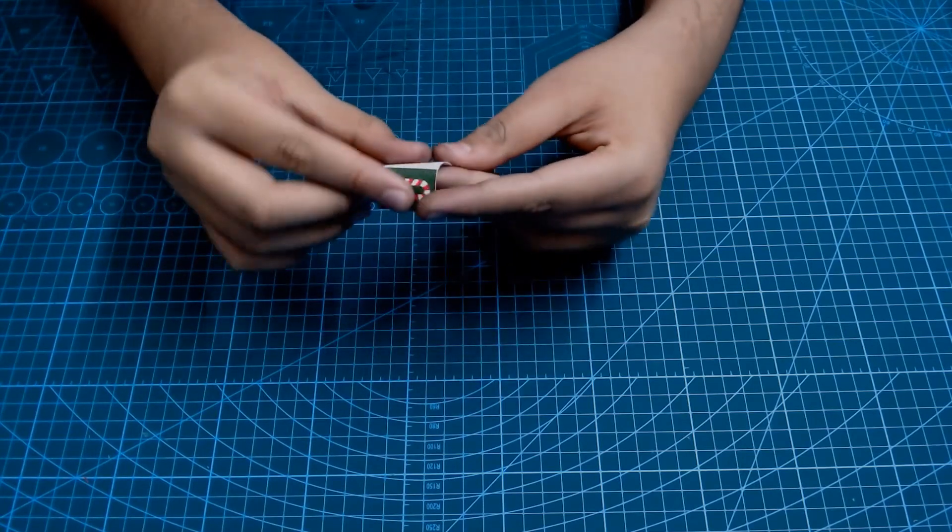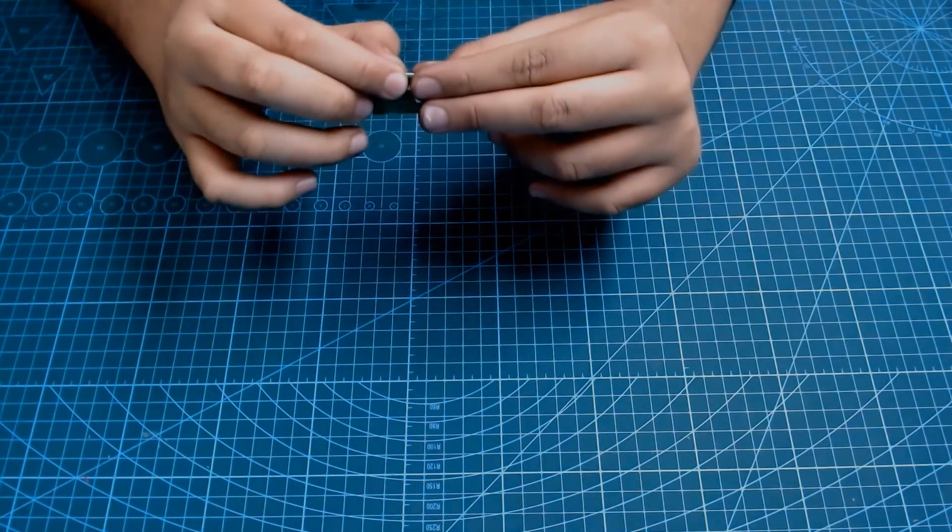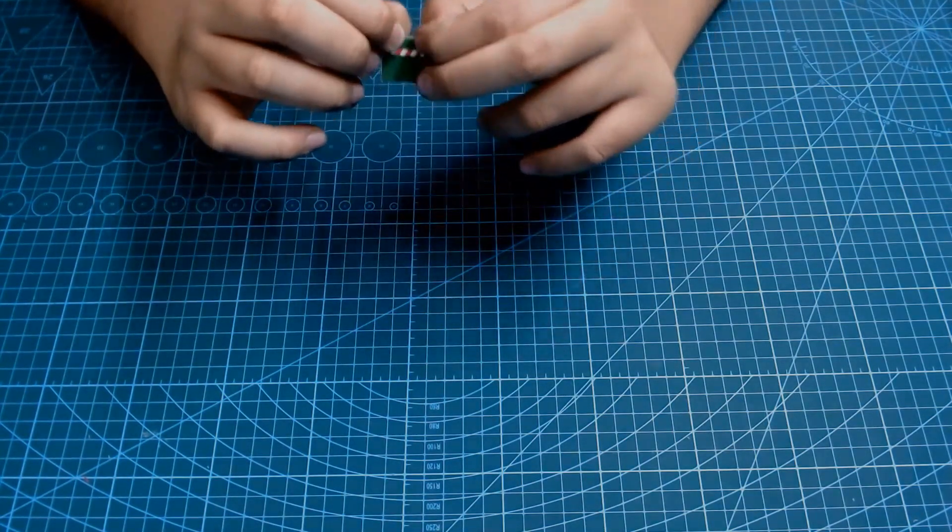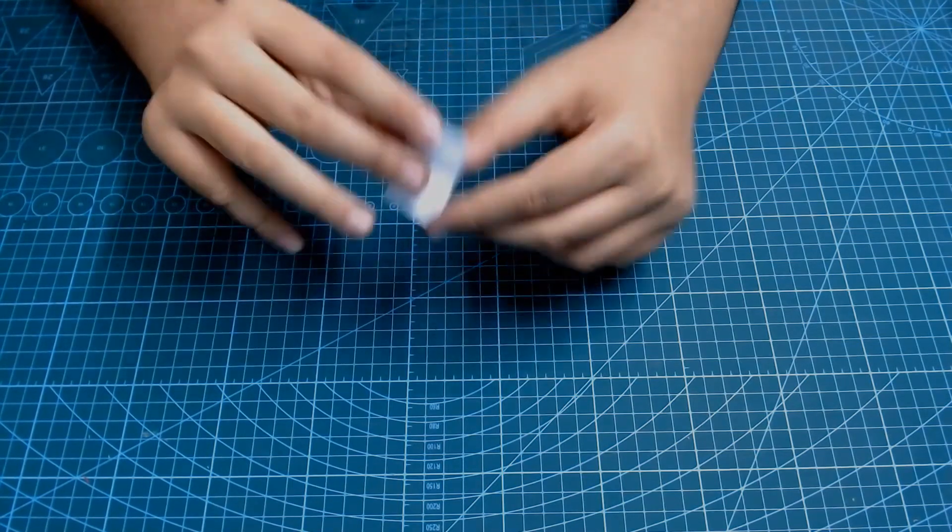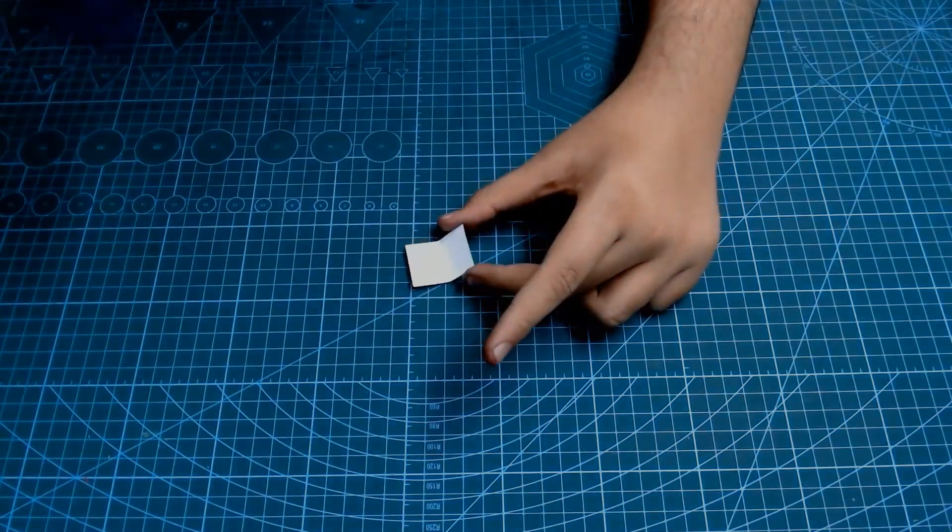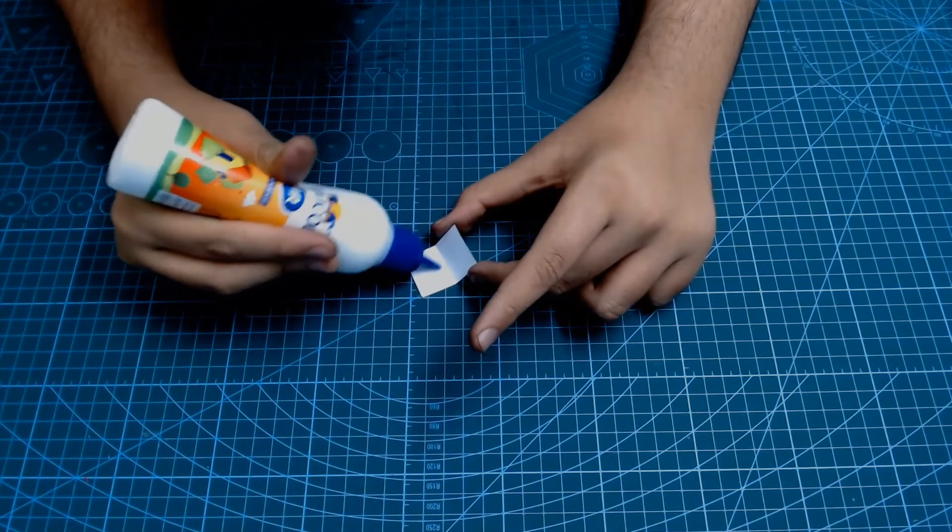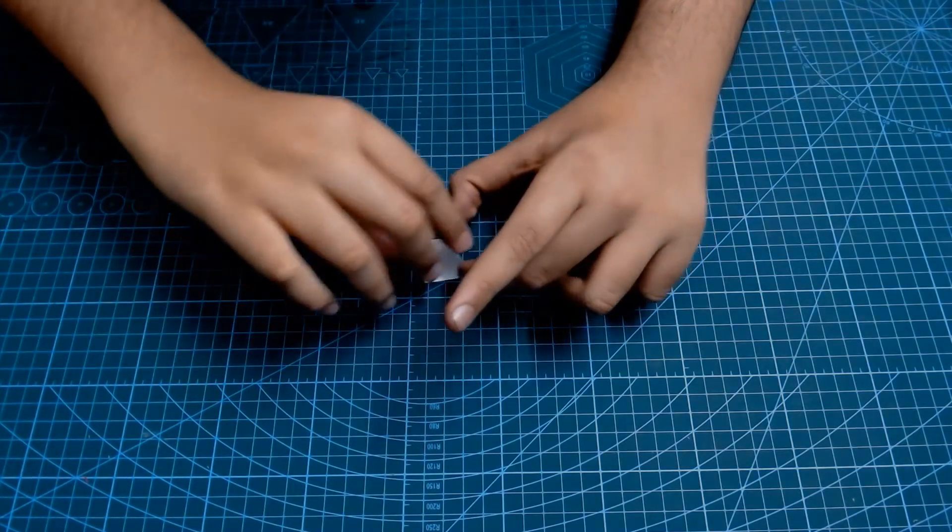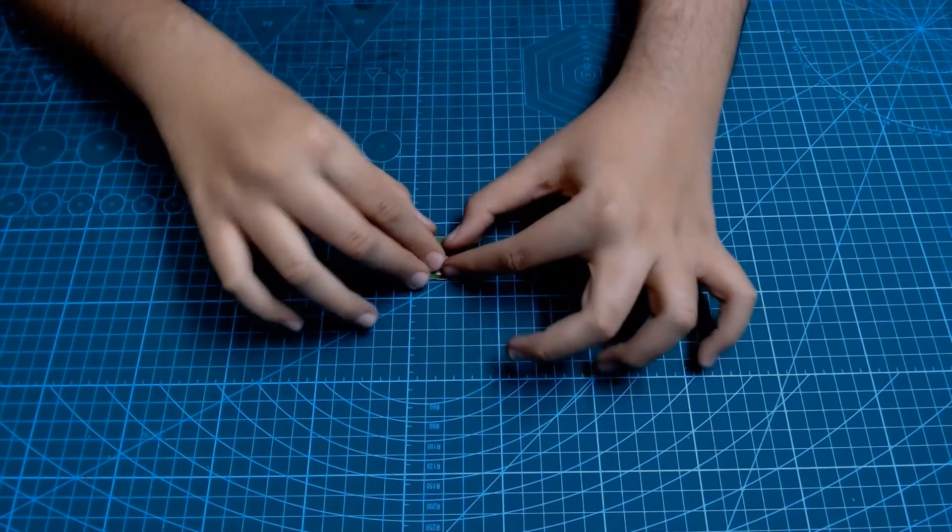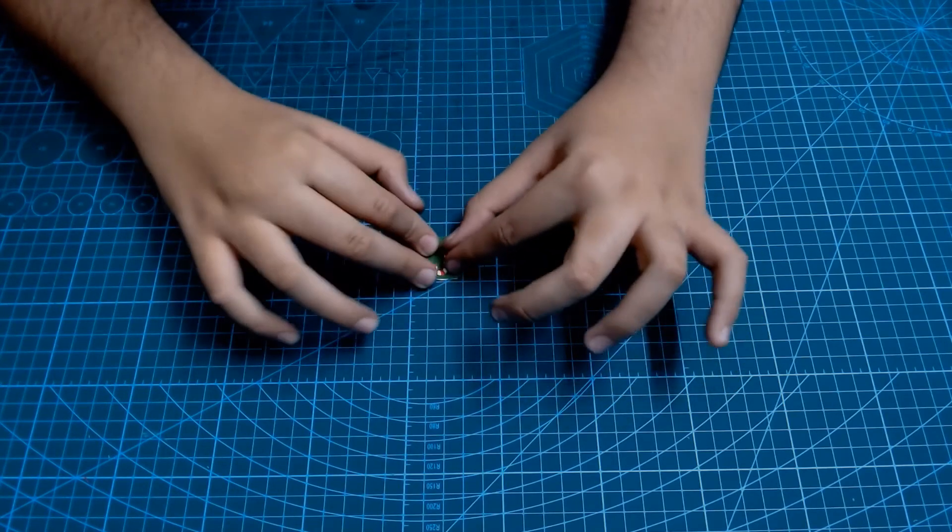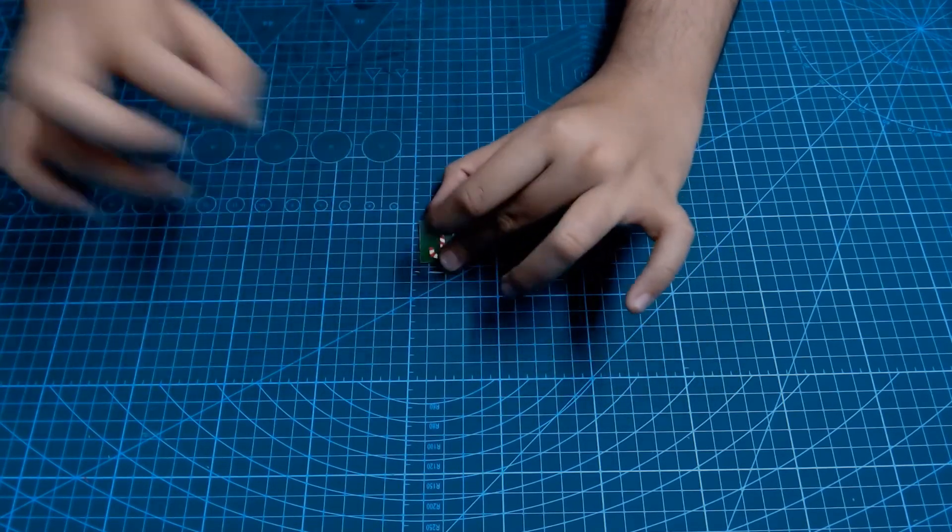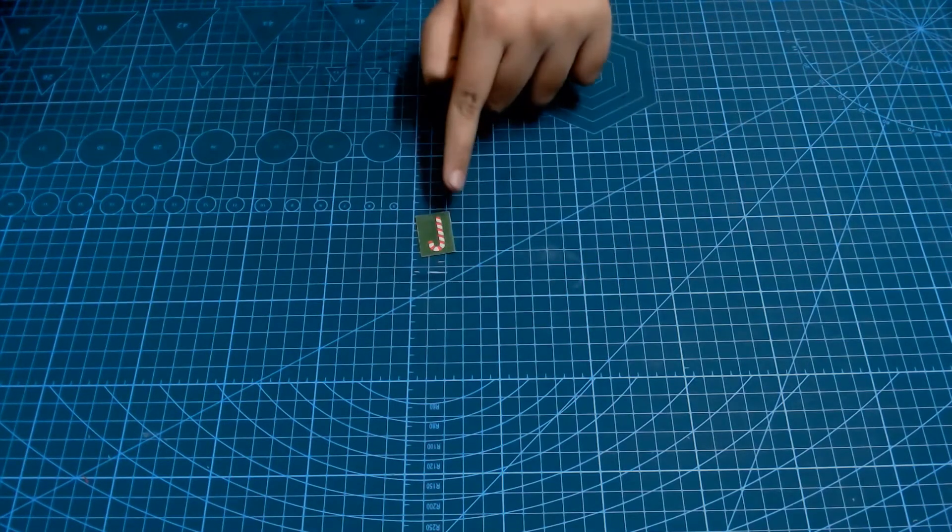you're going to take this and fold it in half on the dashed line like that. Then, you're going to unfold it. Take your glue, apply it generously and fold it in half like that. And then, you just have to cut it.